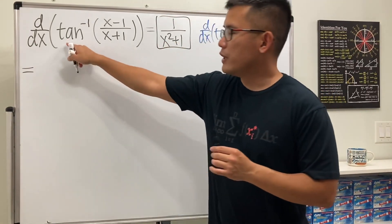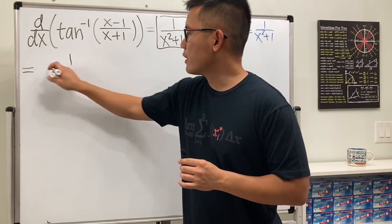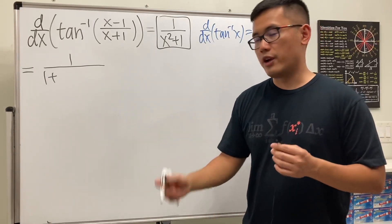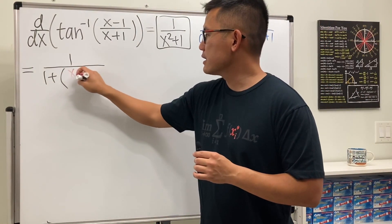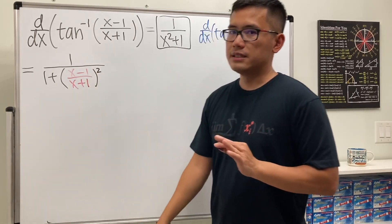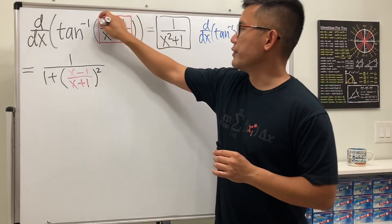Alright, when we differentiate inverse tangent, the first thing is, we'll just do 1 over 1 plus whatever this is, and then we square that. So let me just go ahead and put a parenthesis, and then inside is x minus 1 over x plus 1, and then we square. But this is not it yet. We will still have to use the chain rule, multiply by the derivative of the inside.